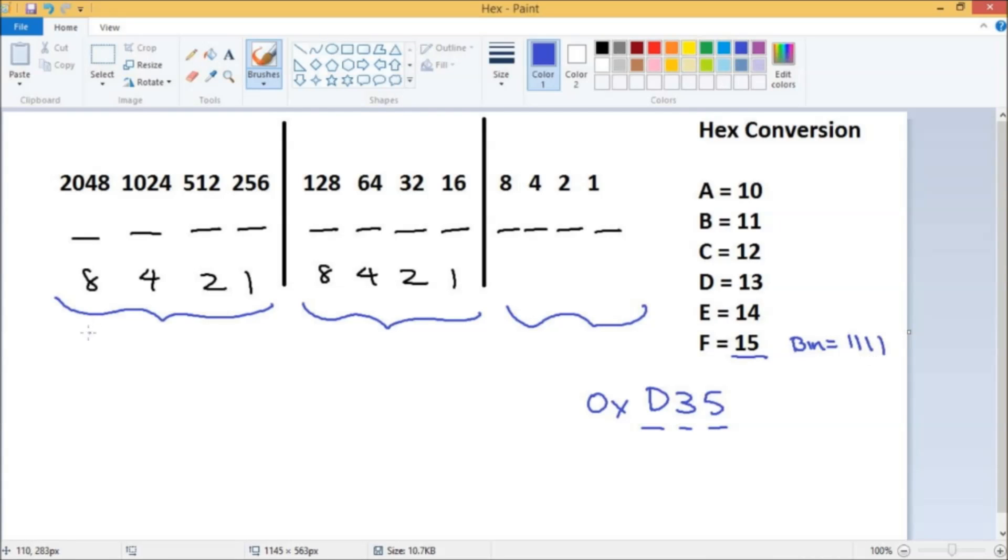All right, so D, well that's going to be 13, right? So we want 8 plus 4 is 12, plus 1 is 13. So that's going to be our binary number for that specific character. So we've done that. Now we want 3, so 2 and 1 is 3. So we got that one. And then for the number 5, we just want 4 and 1, so we have that one.